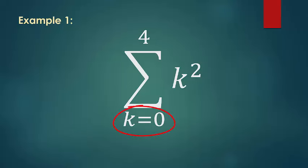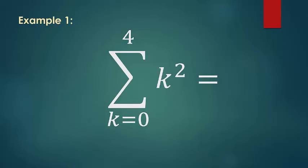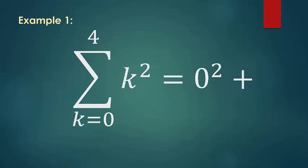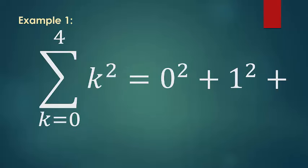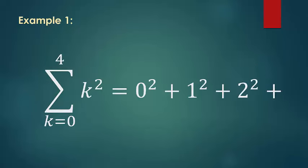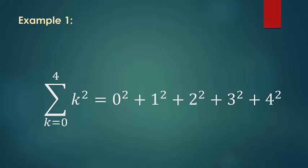This is a summation from k equals 0 to 4 of k squared. So what does that equal? Well, first we let k equal 0, then we increase k by 1 to 1, then we add another 1, and now we have 2, 3, until k is equal to 4. And at that point we stop, because our lowest value is 0, and our highest value is 4.